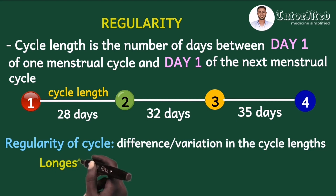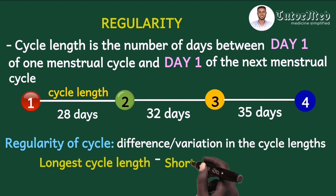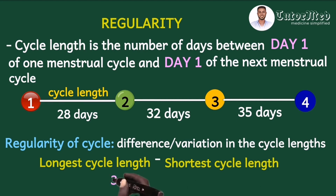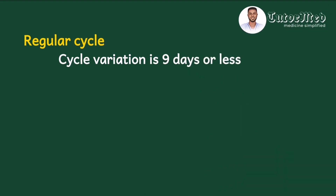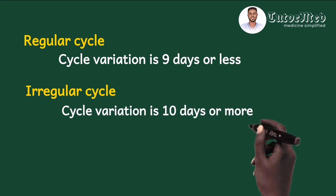The variation is the longest cycle length minus the shortest cycle length. In this example, the longest was 35 days minus the shortest of 28 days gives 7 days. For a regular cycle, the cycle variation should be 9 days or less, so this pattern is regular. For an irregular cycle, the difference or cycle variation is 10 days or more.